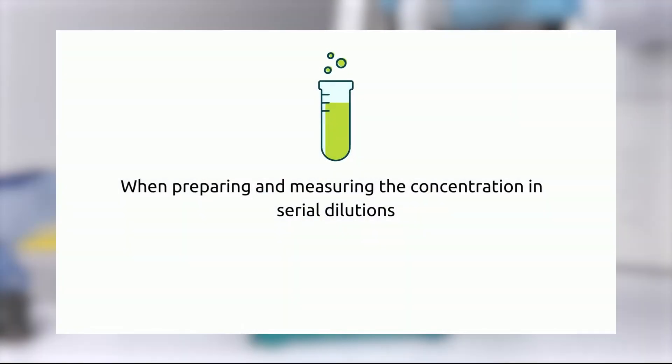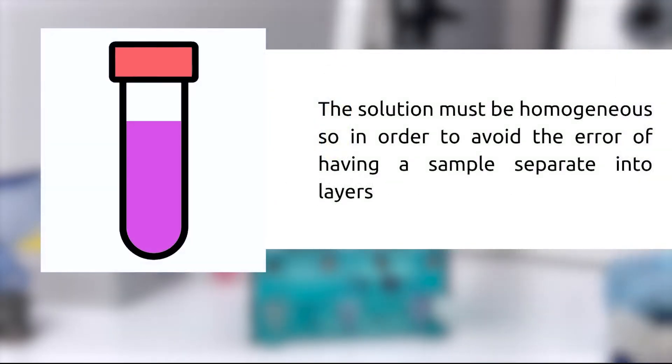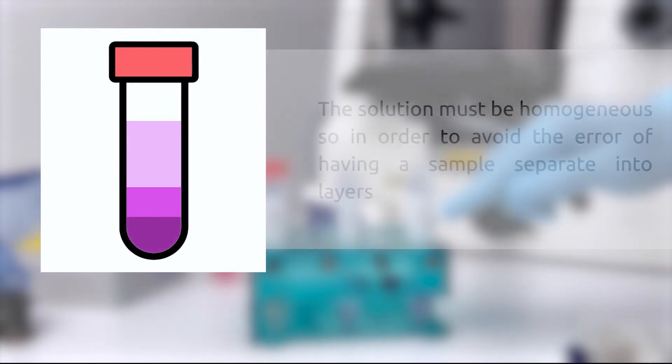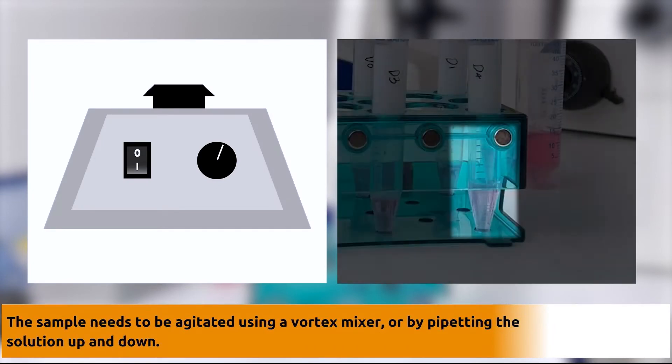When preparing and measuring the concentration in serial dilutions, the solution must be homogenous, so in order to avoid the error of having the sample separate into layers, the sample needs to be agitated using either a vortex mixer or by pipetting the solution up and down.